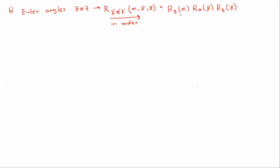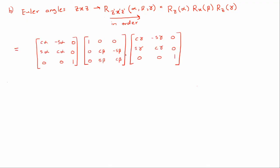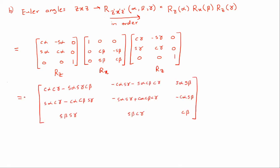And the first step would be to find the product of these three rotation matrices. So the three rotation matrices would be equal to this. You have your Z rotation, X, and your final Z rotation with their respective angles. If you take the product of these three rotation matrices, you should get this as your final rotation matrix. Now this rotation matrix would be equal to the rotation component in the transformation matrix we found in part A.